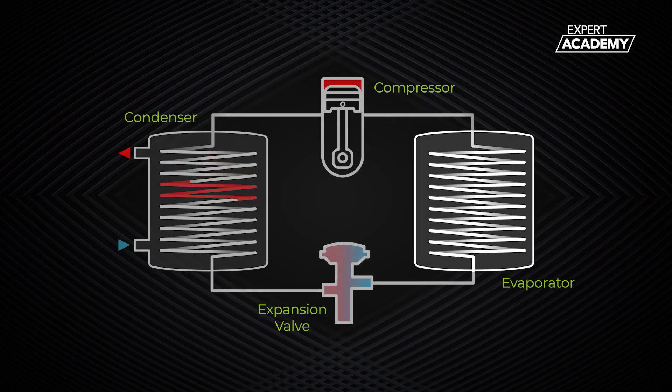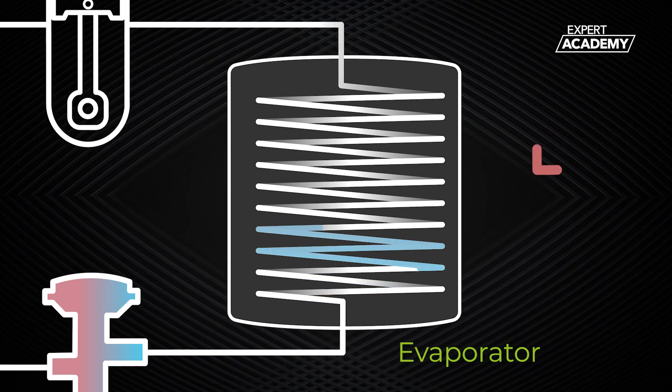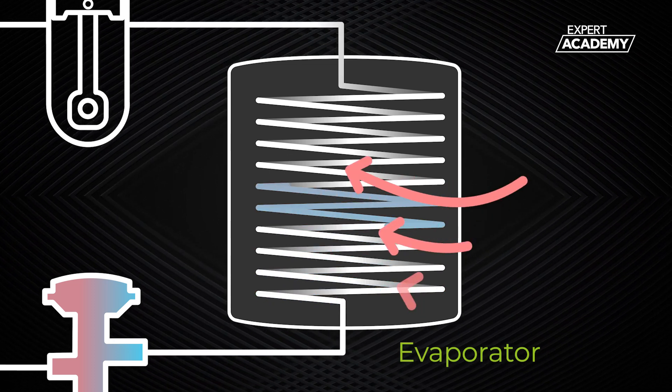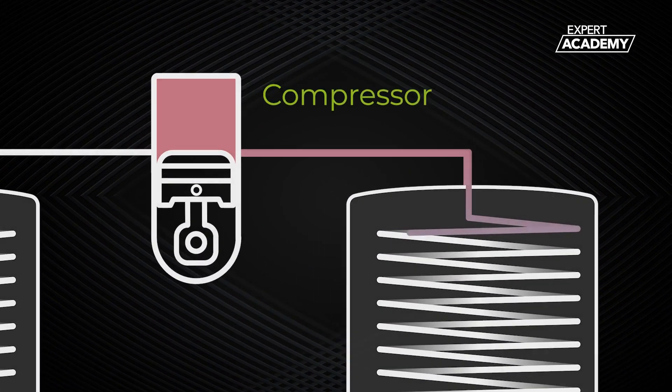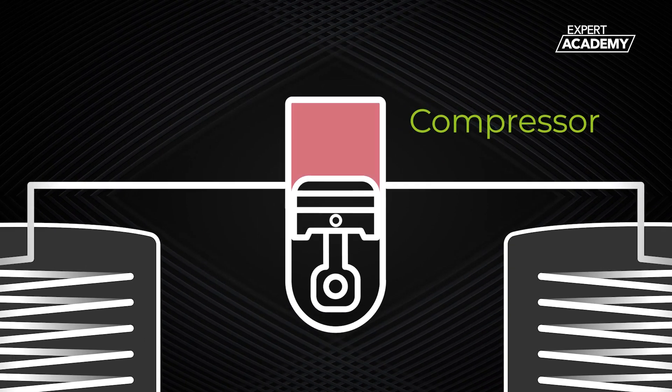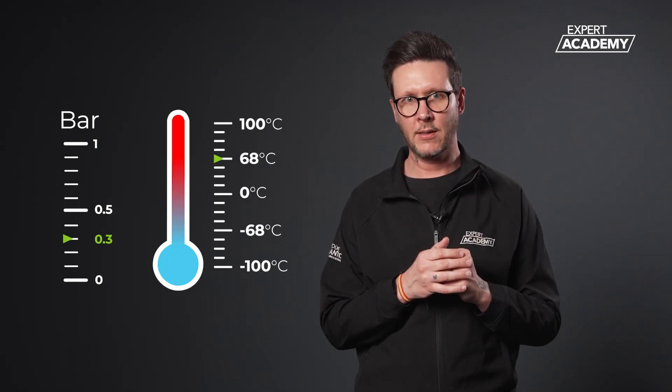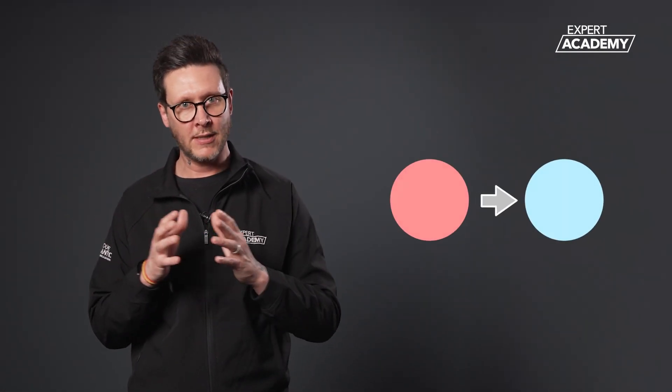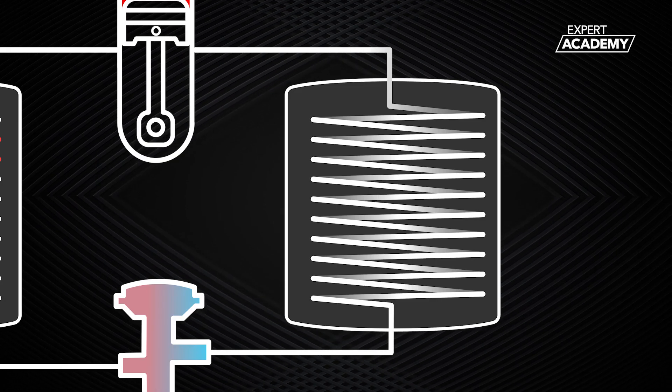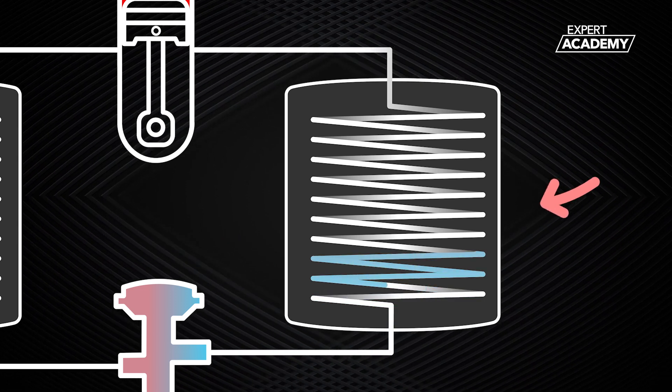We will start at the evaporator. At this stage of the vapor compression cycle, the refrigerant in the evaporator is at a far lower temperature than the surrounding outside air. It is also on the suction line into the compressor, which helps maintain a low pressure. Remembering that lower pressure reduces the boiling point of a liquid and heat moves from areas of higher temperature to areas of lower temperature. The greater the difference, the bigger the transfer.